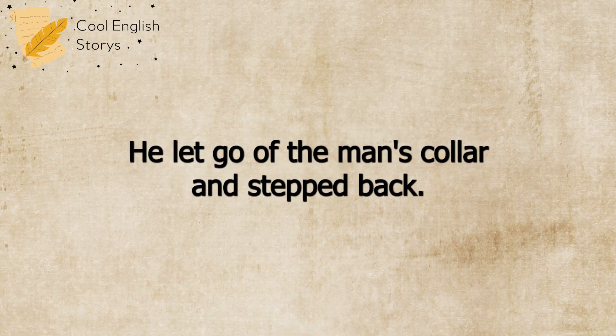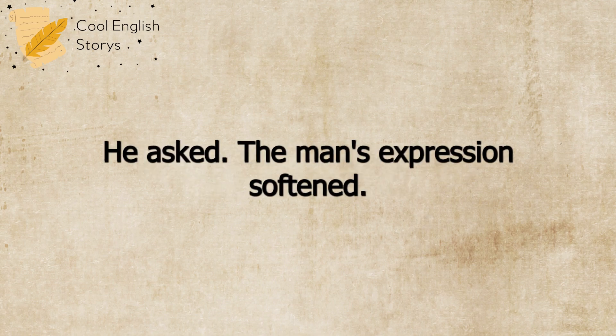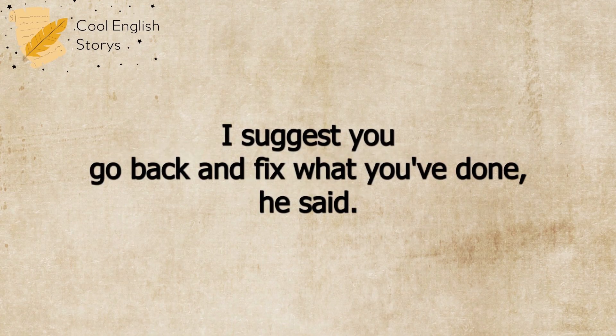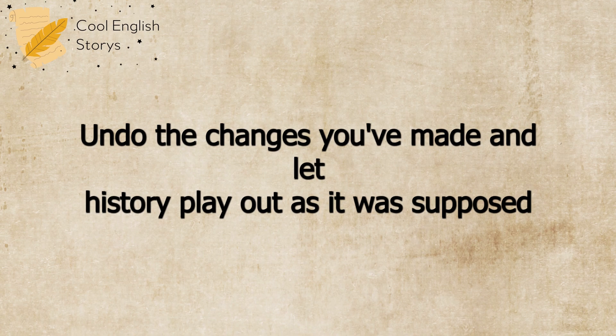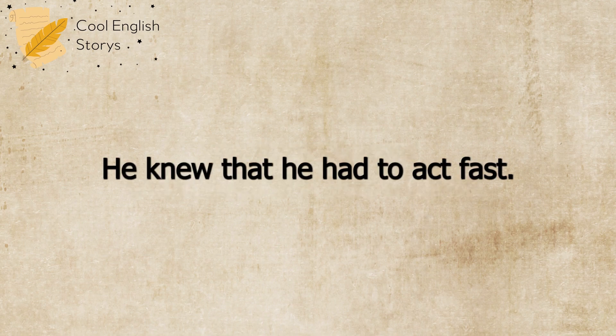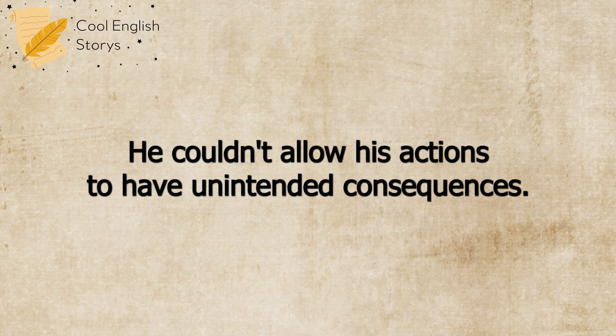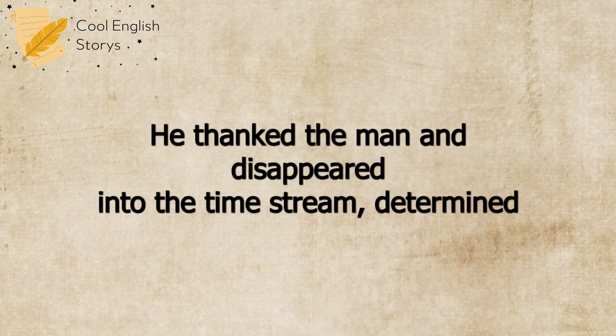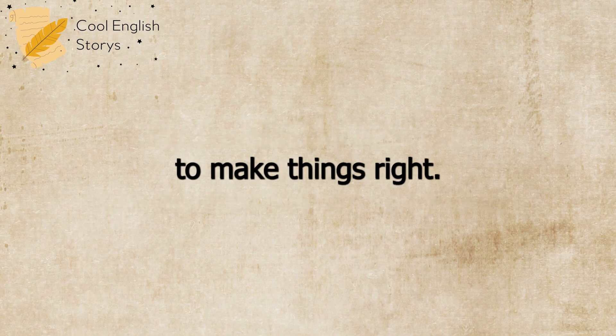He let go of the man's collar and stepped back. 'What do you suggest I do?' he asked. The man's expression softened. 'I suggest you go back and fix what you've done,' he said. 'Undo the changes you've made, and let history play out as it was supposed to.' The Time Traveler considered the man's words. He knew that he had to act fast. He couldn't allow his actions to have unintended consequences. He thanked the man and disappeared into the time stream, determined to make things right.